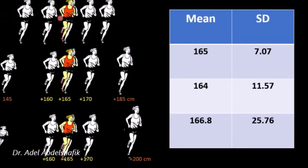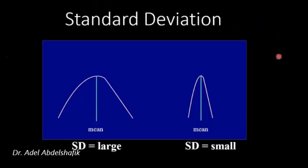Notice that in the first group the standard deviation is 7, in the second it is 11, and in the last it is 25. As the group becomes more widespread compared to the mean, the standard deviation gets higher. Graphically: if the standard deviation is small, the values are clustered close to the mean; if it is high, the values are spread far from the mean.